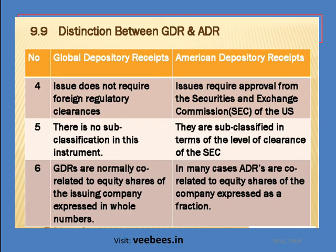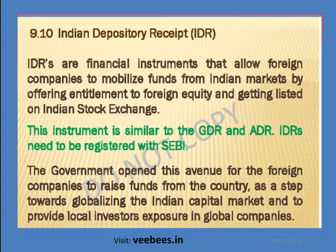In GDR there is no sub-classification, but in ADR there are sub-classifications according to the level of clearance. GDRs are normally correlated to equity shares of the issuing company expressed in whole numbers, but in many cases ADRs are correlated to equity of the company expressed as a fraction.